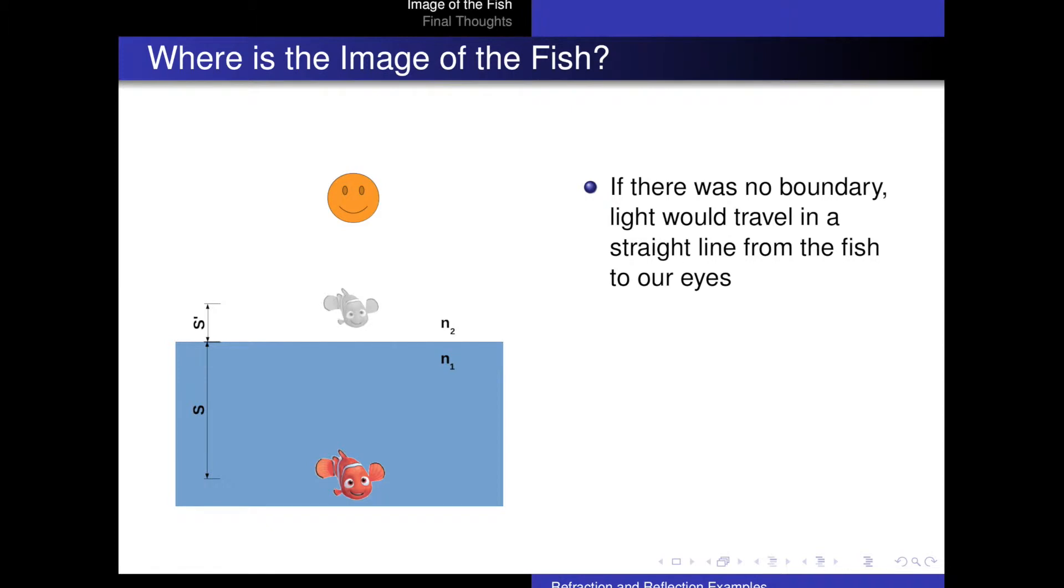So if there was no boundary, light would bounce off the orange fish and travel in a straight line right to our eyes. But since there is this boundary between the air and the water, light is going to refract at the surface and the image is not necessarily going to be in the place we expect.